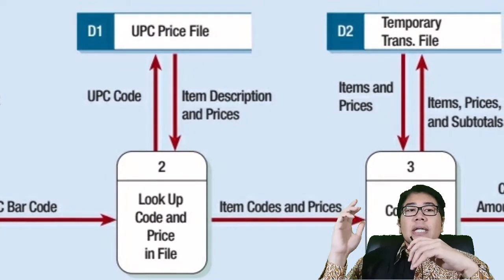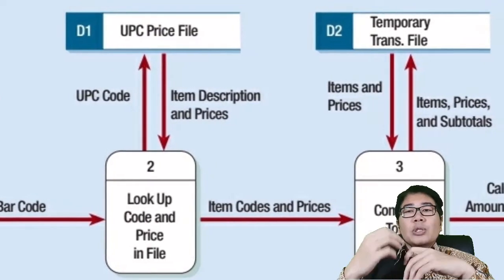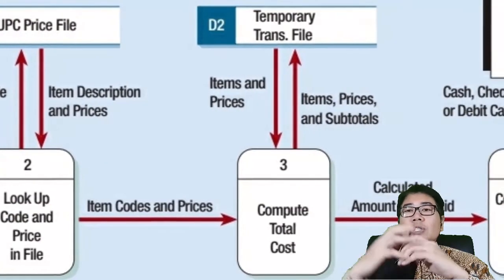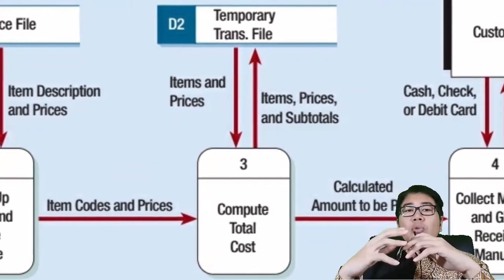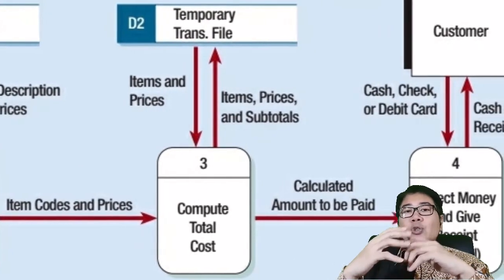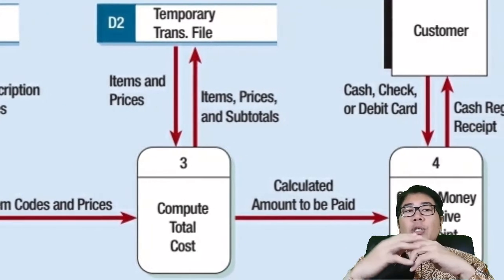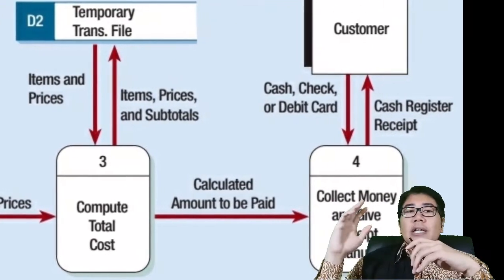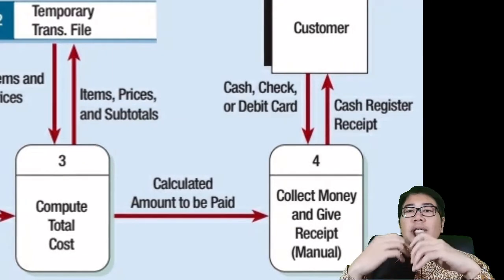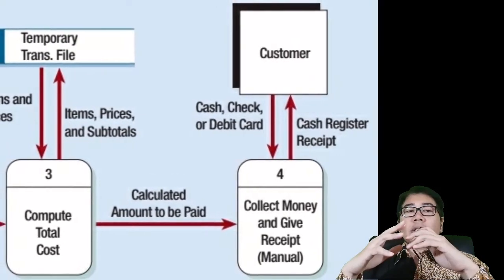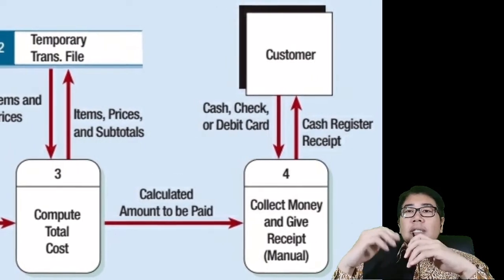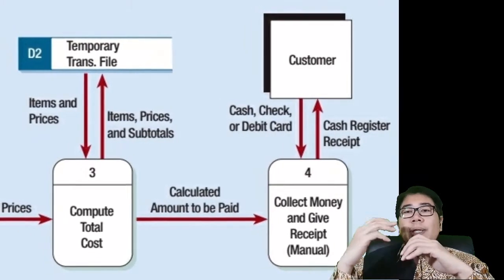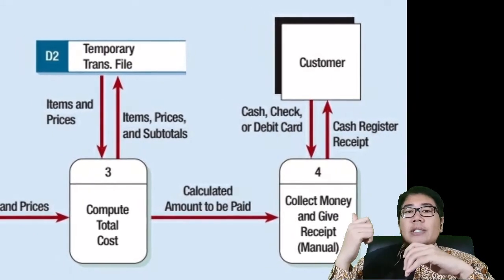On the third process, calculating the totals, the system will create a temporary query transaction file to calculate the sub-total, and then send the totals back to the process. And last, on the fourth process, the receiving payment process, the physical diagram will show the types of payment that will be received — whether it's cash, check, or debit card.